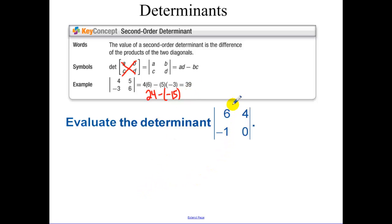For this determinant, 6 times 0 minus the other diagonal, 4 times negative 1, simplifies to be positive 4.